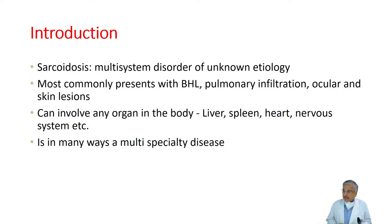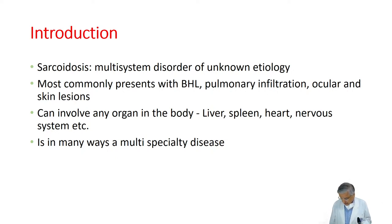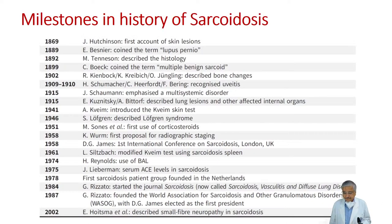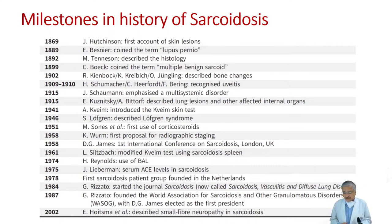Sarcoidosis commonly presents with bilateral hilar lymphadenopathy, pulmonary infiltrates, and ocular and skin lesions. It can involve any organ of the body. There's a whole milestone in sarcoid history from 1869 when Hutchinson first described skin lesions, all the way up to 2002 when small fiber neuropathy was also described as part of sarcoidosis.